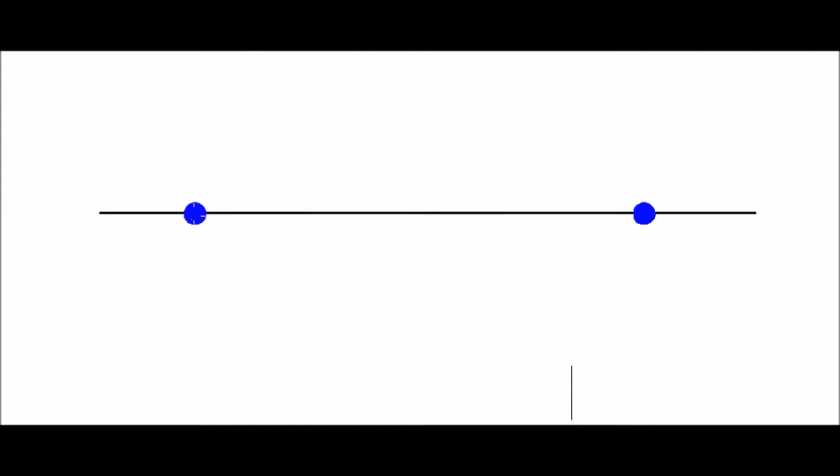Always remember that in a two-point perspective, all the heights are drawn vertically straight, whereas all the lengths and the widths of the objects are drawn such that they coincide at the vanishing points. Here we have drawn a vertical line to depict the height of the object.